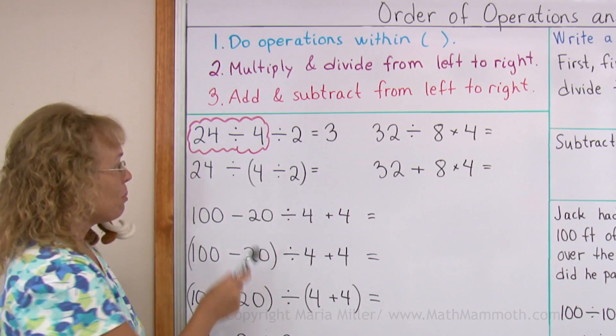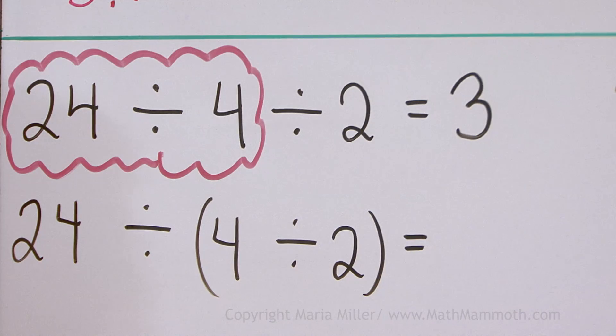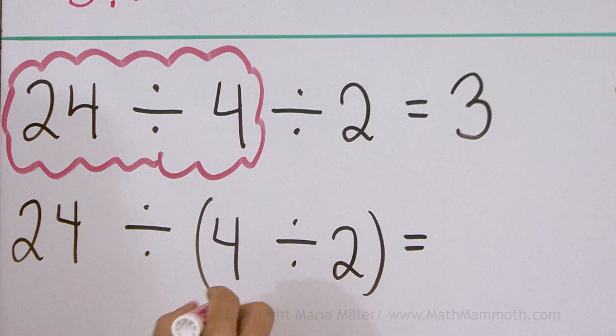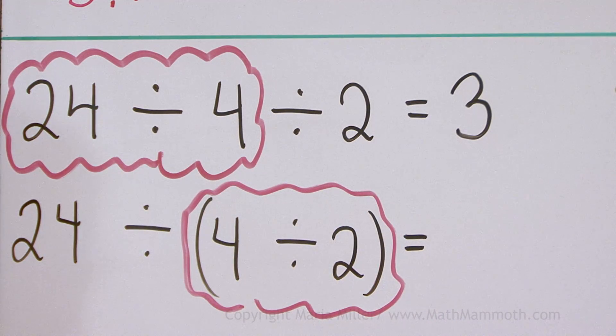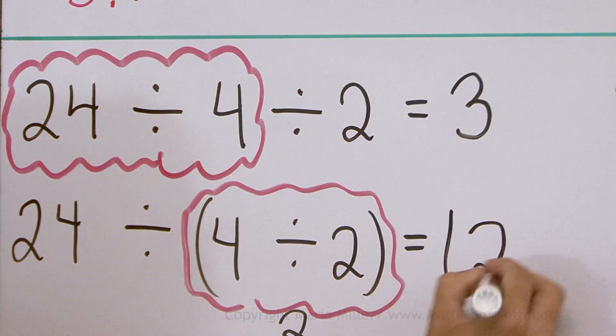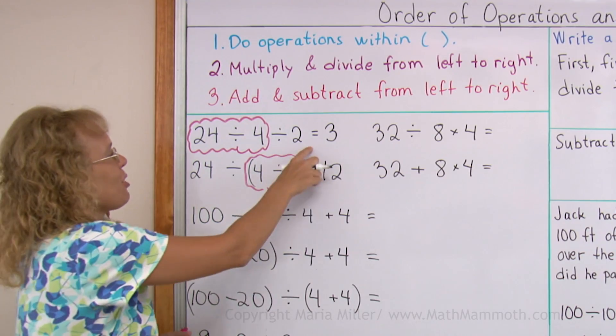Now compare it to this problem. This time there's parenthesis, so we do this first. 4 divided by 2 equals 2. And then 24 divided by 2, we get 12. A totally different result from the one above.